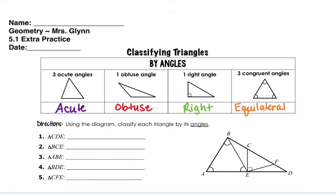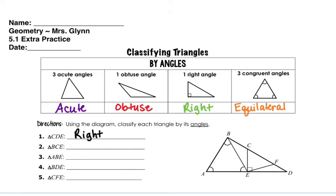Looking over here at the right-hand side, you can see this figure has points A, B, C, D, E, F — all labeled with some symbols showing congruency and a right triangle. For triangle CDE, which is this triangle over here, you can see that it has a right triangle symbol in the corner. So that means it's a right triangle.